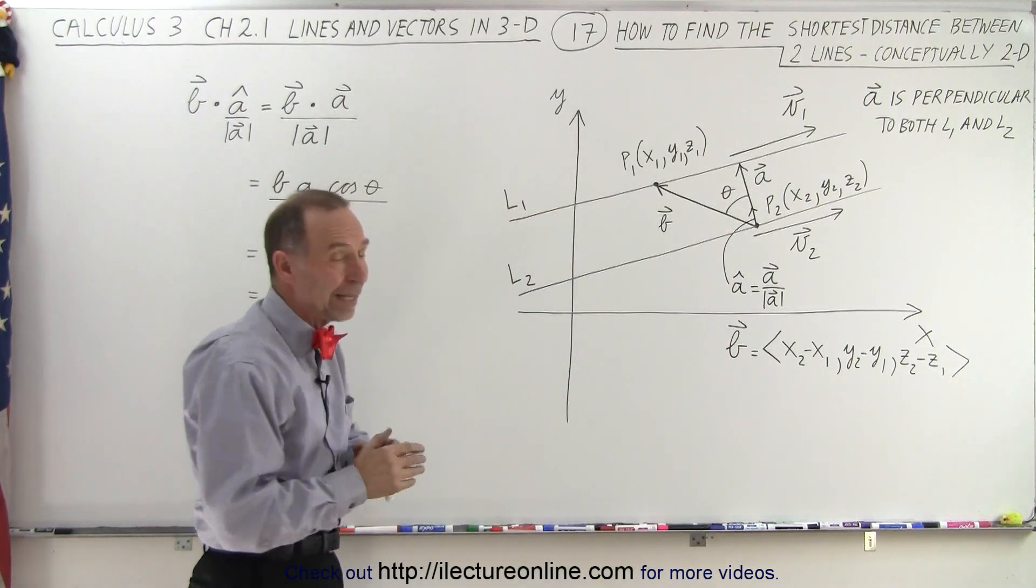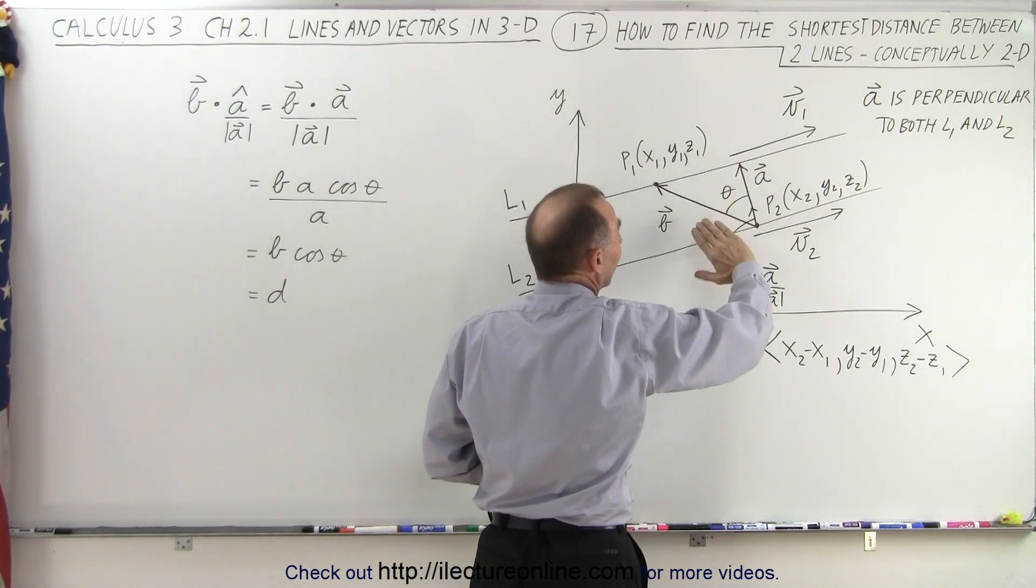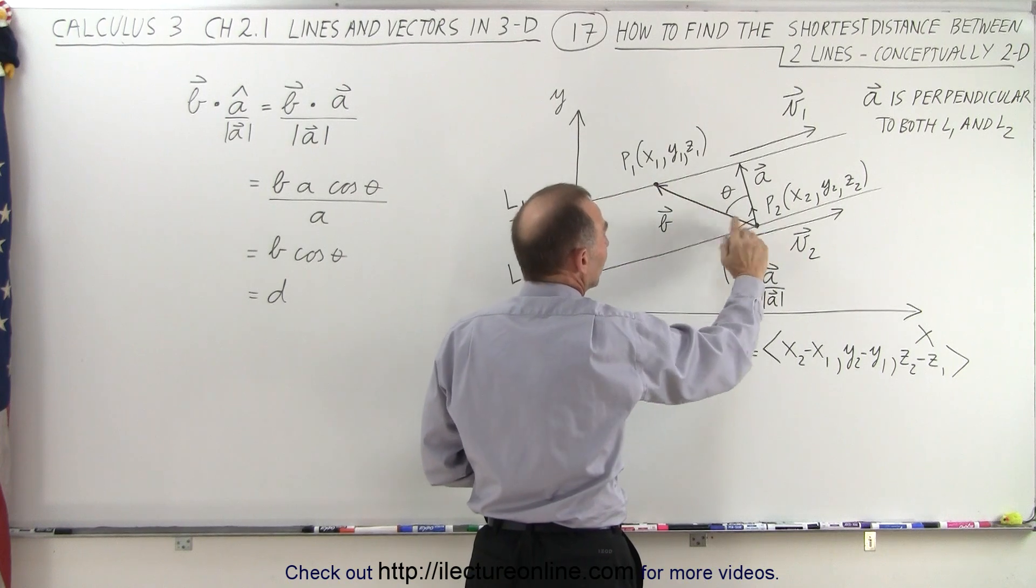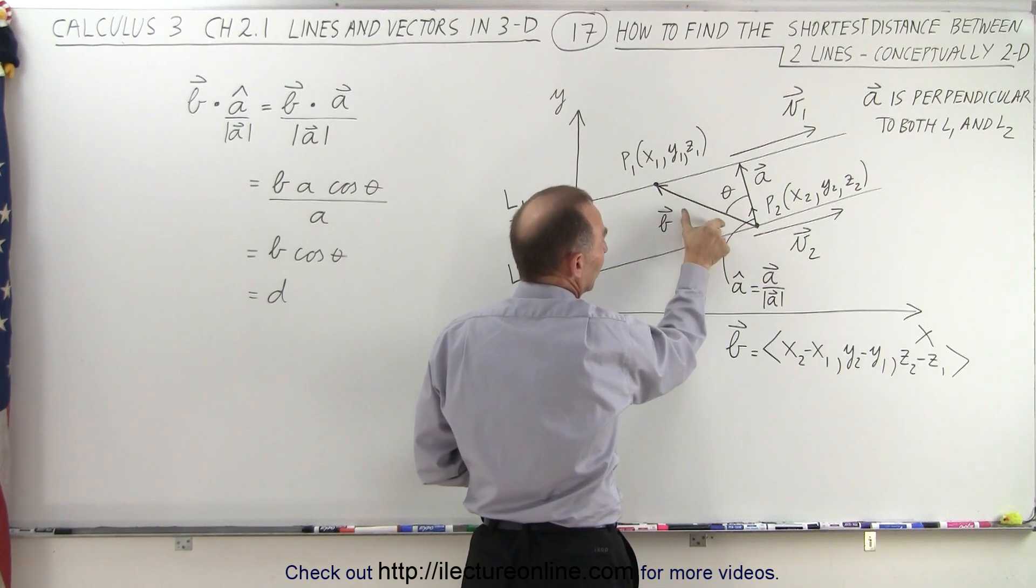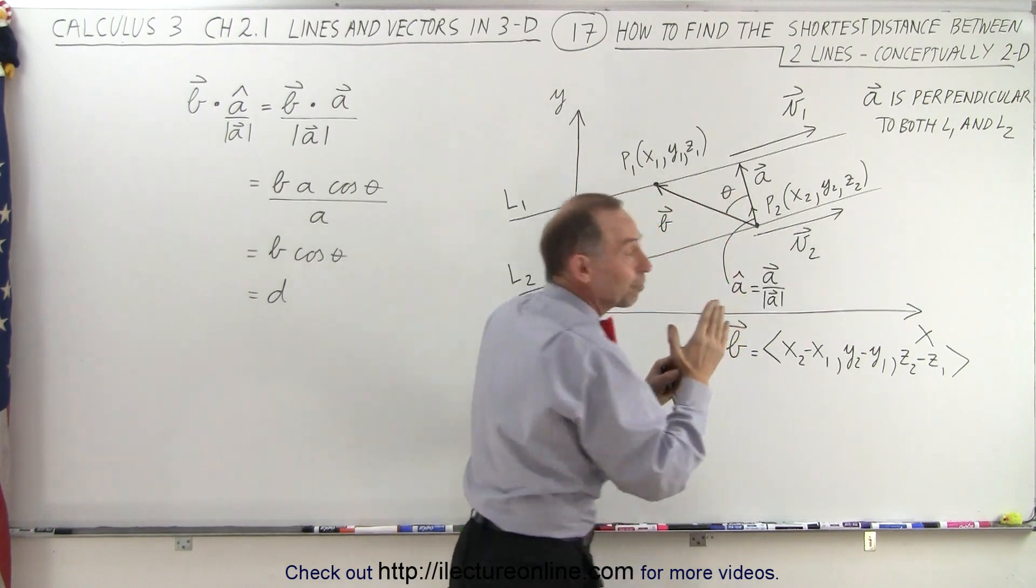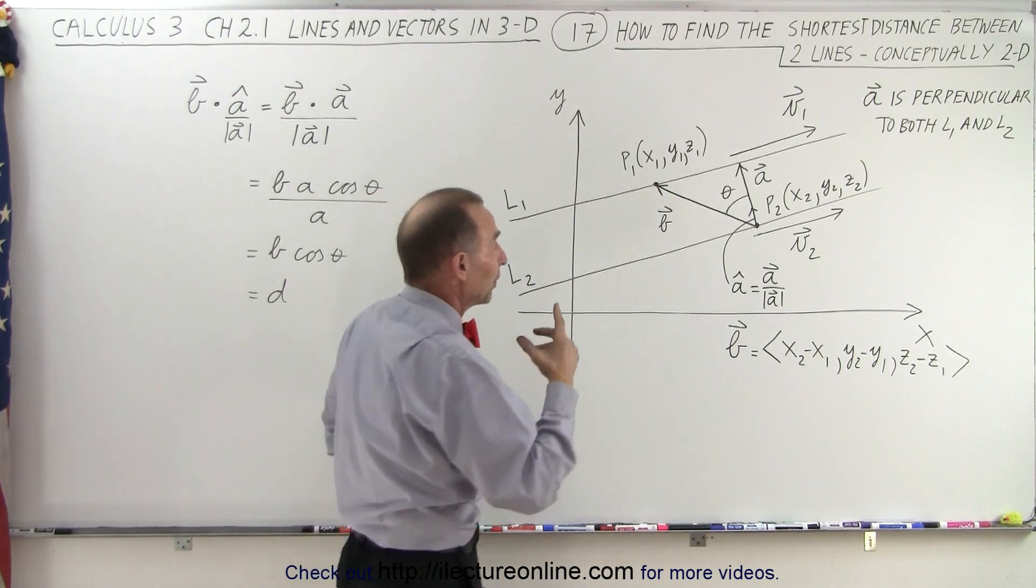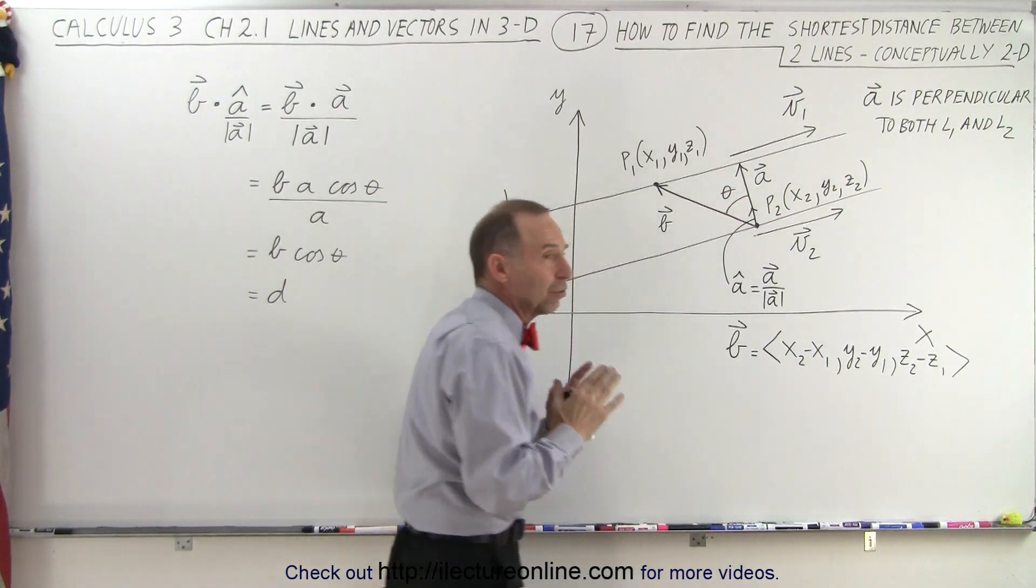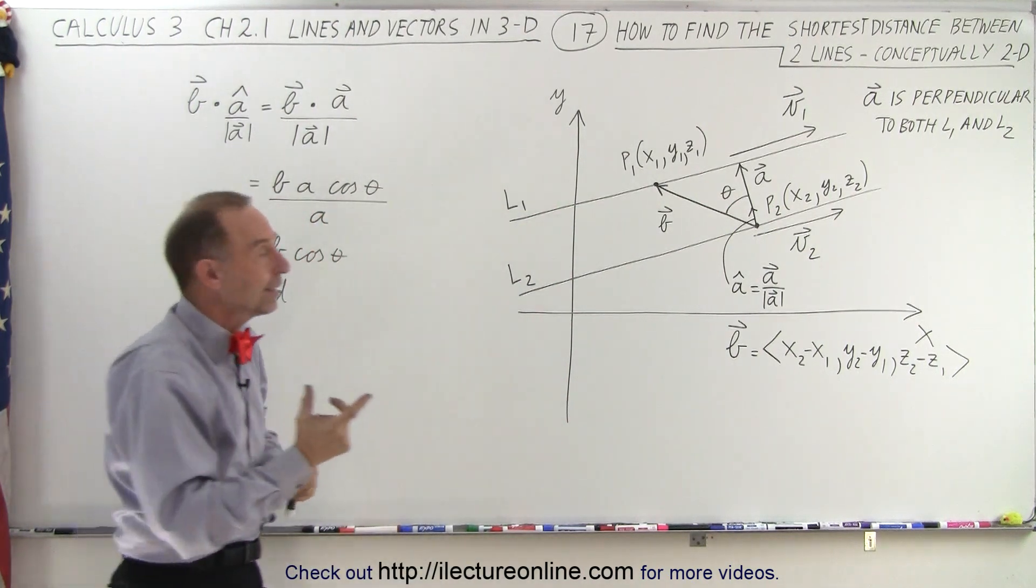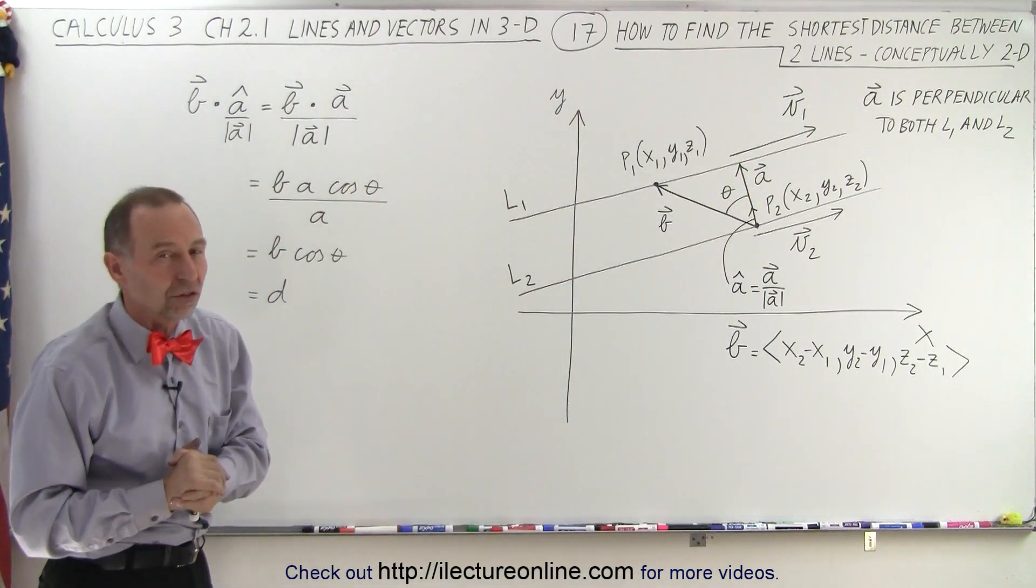So that's essentially what we're trying to do in three dimensions. We're trying to get the vector which is perpendicular to both lines, and then we take two points, one on each line, draw a vector between them, and then do a dot product between the vector that connects the two points with the vector that's perpendicular to the two lines. And essentially, we only take the unit vector, so we just want the direction and we don't want the magnitude. So we only take the magnitude of B along the direction of A, and that gives us the shortest distance.